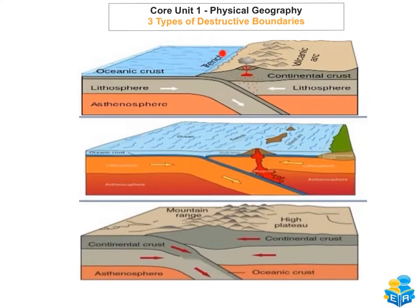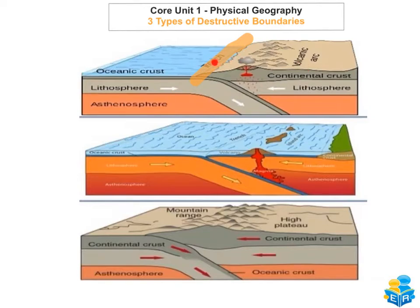Some key features of this destructive boundary when oceanic and continental crust meet: usually an ocean trench forms along the boundary. Volcanoes usually form as well — you tend to get quite large composite and ash-and-cinder volcanoes. An example of these would be the volcanoes found in the Andes.